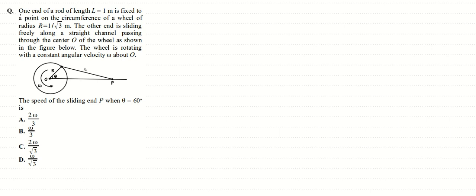In this question, one end of a rod of length L = 1 meter is fixed to a point on the circumference of a wheel of radius R = 1/√3 meter. The other end is sliding freely along a straight channel passing through the center O of the wheel. This rod is inextensible and the fixed point on the wheel is labeled P.